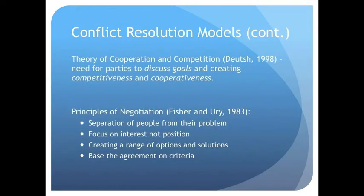This basic concept is developed further into different conflict resolution theories. The theory of cooperation and competition, developed by Deutsch, explains the need for both parties to discuss their goals, making them competitive and cooperative, creating an element of trust between the two parties and leading to conflict resolution. Fisher and Roy also followed this notion by introducing four principles for effective negotiation: separation of people from their problem, focus on interest not position, creating a range of options and solutions, and basing the agreement on criteria.